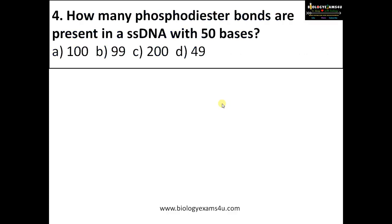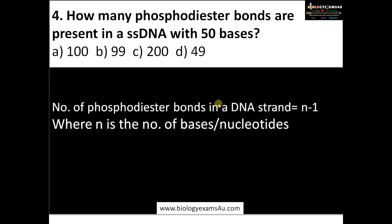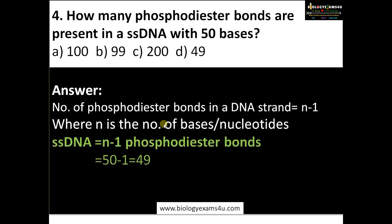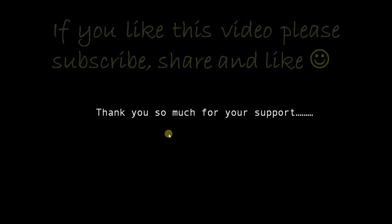Last question: how many phosphodiester bonds are present in a single-stranded DNA with 50 bases? For a single strand, the formula is n minus 1. Therefore the answer is 49. Hope you are fine with these types of questions. Thank you so much for your support. You are with biology exams4u.com.